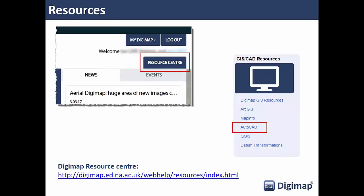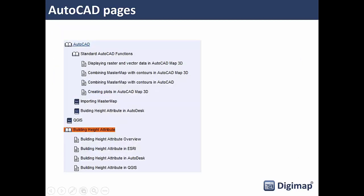In terms of help resources, the Resource Centre is linked from our home page via a button top right, and serves as a front end to our help system. Within that there's a whole series of pages devoted to AutoCAD — common things like building up 3D scenes, adding different datasets, and making sure they overlay correctly. There's also a resource index and a tree view of help pages relating to standard AutoCAD functions and building 3D scenes in the Autodesk products.